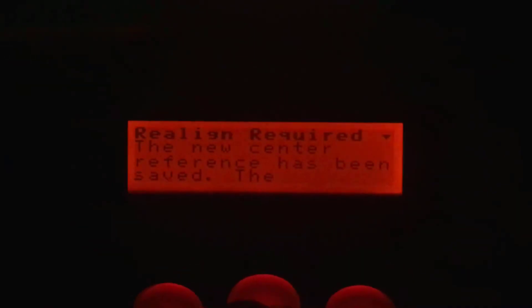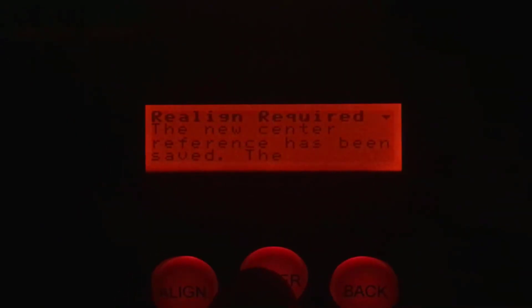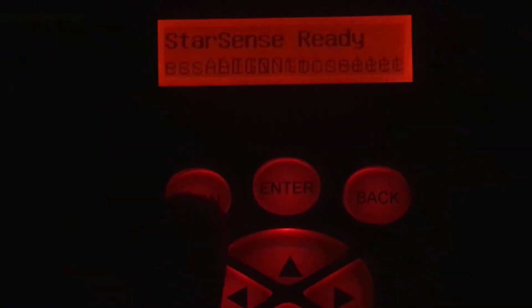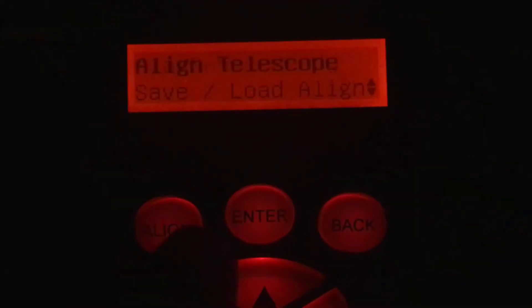Realign is required. So during the calibration process, once you're done with your rough alignment and your fine alignment, it will say realign is required. You don't want to move your telescope. It already knows where it's at. So just hit enter, and that will go back to the main menu. Hit align.